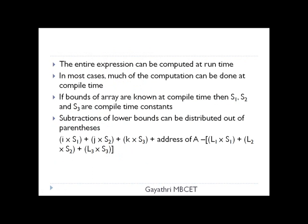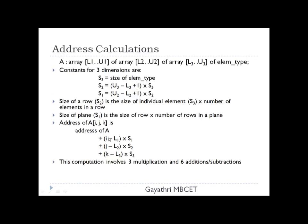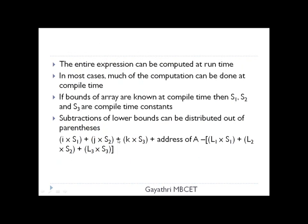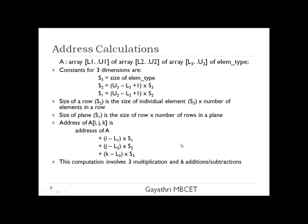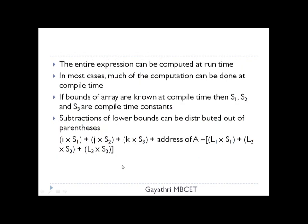The entire expression can be computed at runtime, but in most cases much of this computation is done at compile time. If the bounds of arrays are known at compile time, S1, S2, S3 can be compile-time constants. The subtractions can be distributed: I*S1 + J*S2 + K*S3 + (address(A) - L1*S1 - L2*S2 - L3*S3). This reduces the number of operations at runtime, minimizing additions and subtractions.